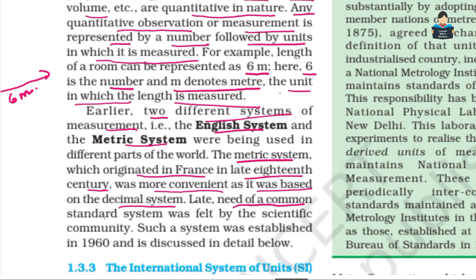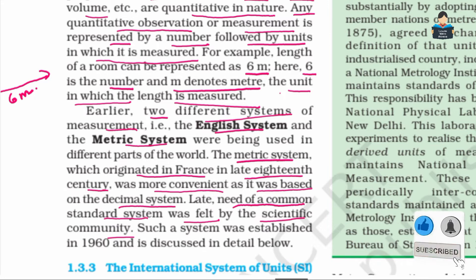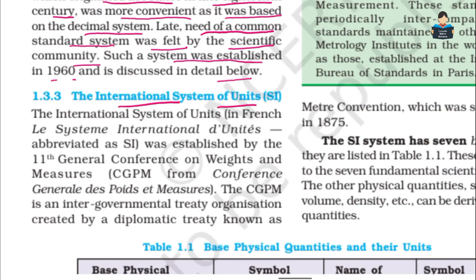The need for a common standard system was felt by the scientific community. A standard system was established in 1960 called the International System of Units, abbreviated as SI — from the French Le Système International d'Unités.